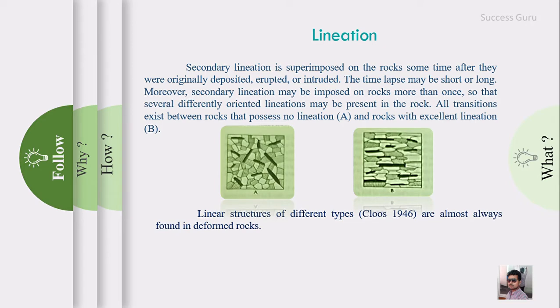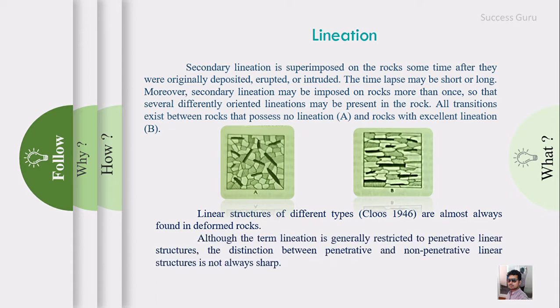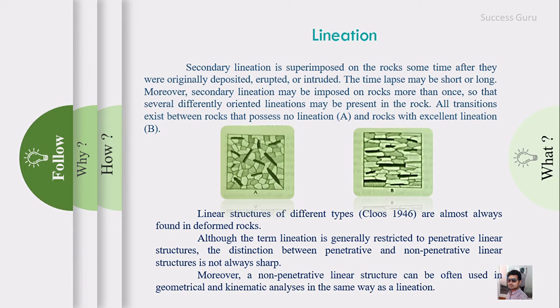Linear structures of different types are almost always found in deformed rocks. According to Cloos (1946), although the term lineation is generally restricted to penetrative linear structures, the distinction between penetrative and non-penetrative linear structures is not always sharp. If you see a mineral orientation on the side of the rock and the same pattern passes into the body of the rock, it is called a penetrative structure. If structures are present only on the surface but not inside the body, they are non-penetrative structures. Striations and slickensides are examples of non-penetrative structures. Non-penetrative linear structures can be used in geometrical and kinematic analysis in the same way as lineations.